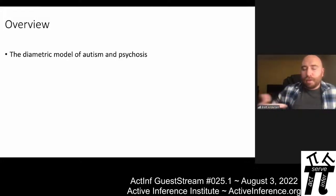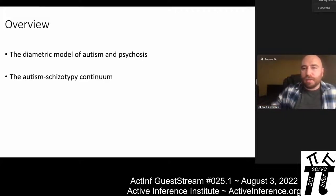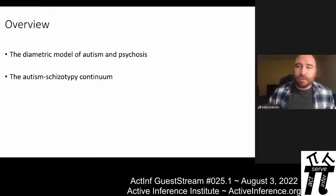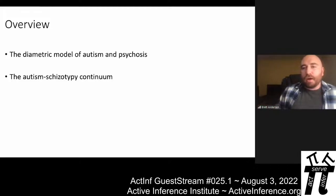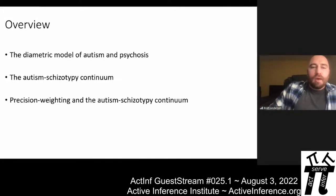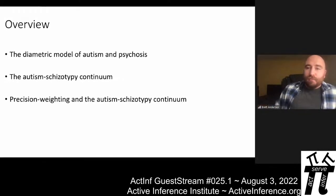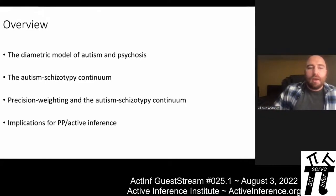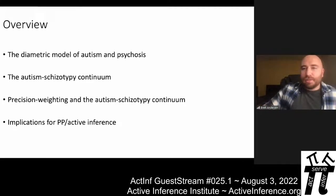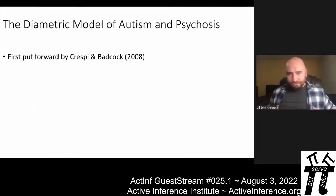I'm going to talk about the diametric model of autism and psychosis — what it is, what some of the evidence for it is, how it manifests in non-clinical populations, which we refer to as the autism-schizotypy continuum, and the hypothesis I put forward in this paper, which has to do with explaining variation along this continuum due to trade-offs in precision weighting. Then I'll talk about some implications for predictive processing and active inference.